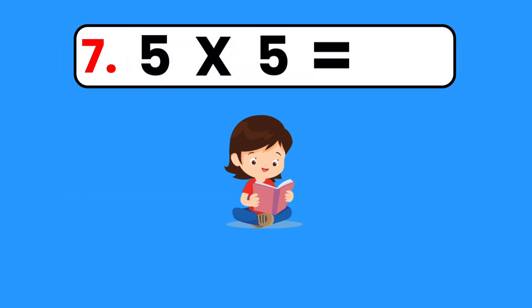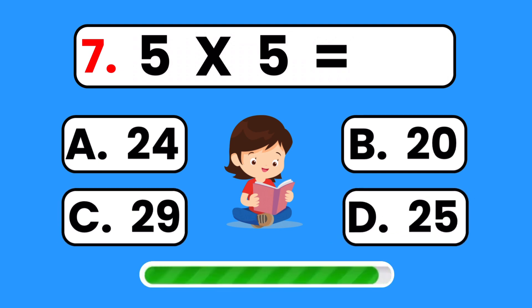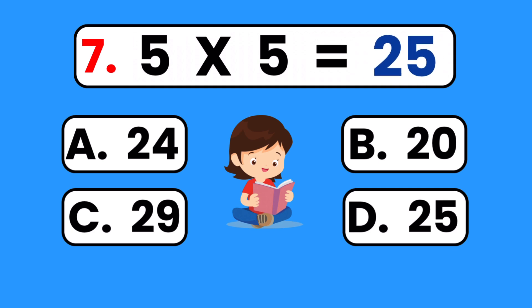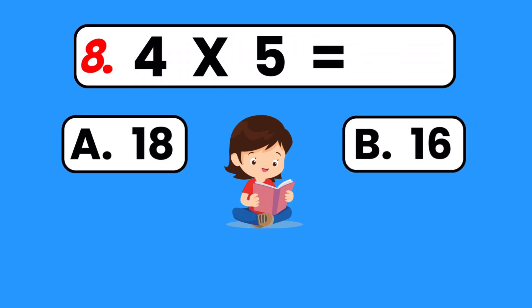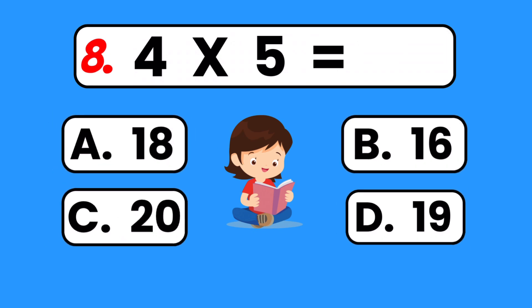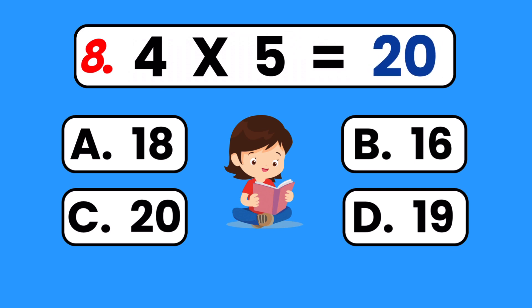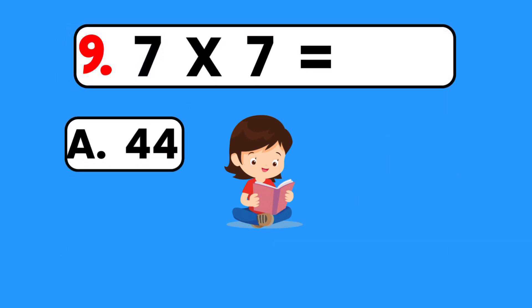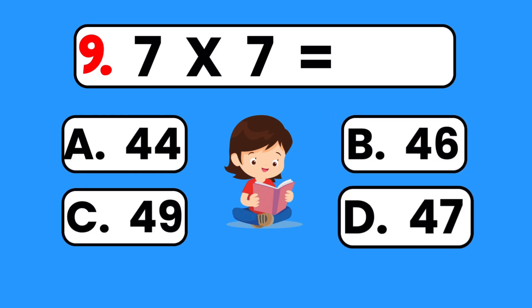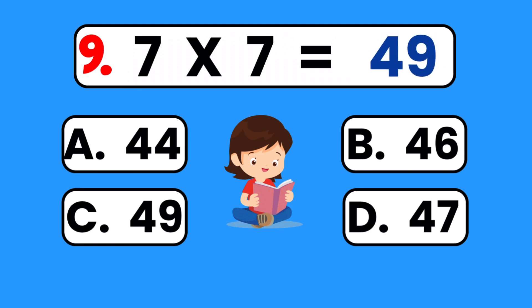5 times 5 equals... 25. 4 times 5 equals... 20. 7 times 7 equals... 49.